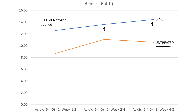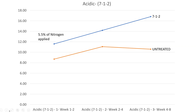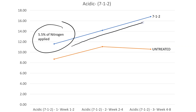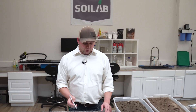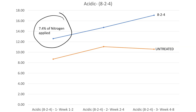Now let's compare a different fertilizer in that same acidic soil. With our 7-1-2 fertilizer, we saw a little bit less — still about five and a half percent of our applied nitrogen made available in those first two weeks — and similarly enhanced release through time through week eight. The trend was the same with our 8-2-4 fertilizer, with just over 7% of the applied nitrogen available in the first two weeks, and a very linear, smooth curve of release moving through time, with nitrogen being released steadily from weeks two through eight.